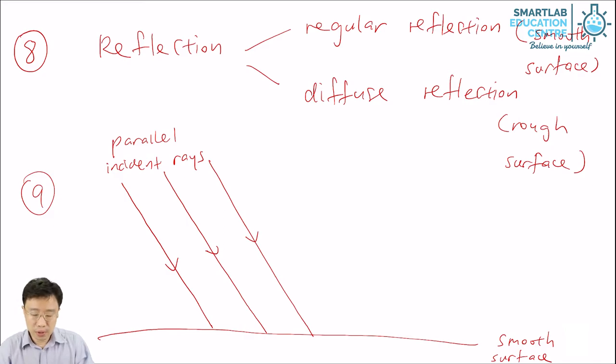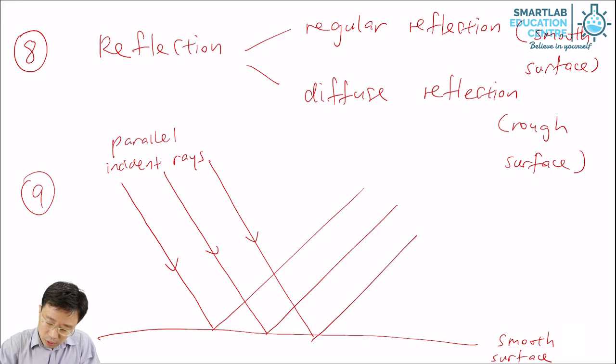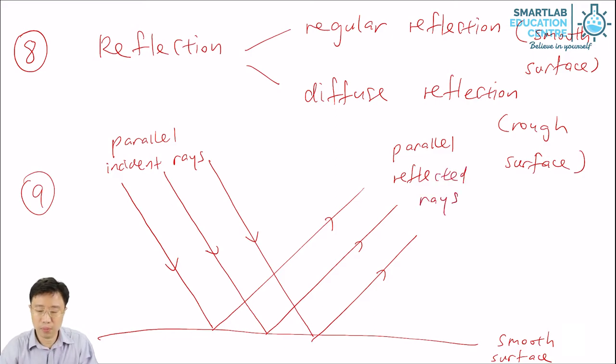When reflection happens, the reflected rays will also be parallel. This is the kind of reflection that allows you to see a mirror image.